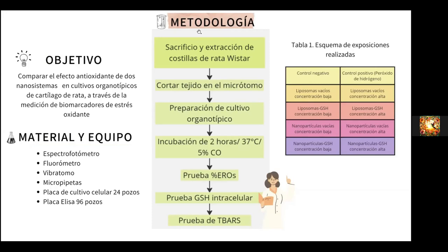En la derecha se encuentra la tabla 1, esquema de exposiciones, donde se encuentran los siguientes grupos: control negativo, control positivo con el agente estresor peróxido de hidrógeno al 100 micromolar, y 4 grupos de liposomas con las siguientes variables: vacíos y con GSH de concentración baja y alta. Estos mismos grupos se realizaron también para las nanopartículas.